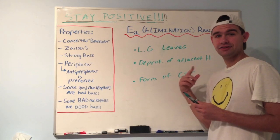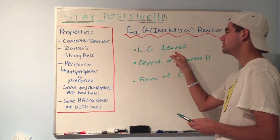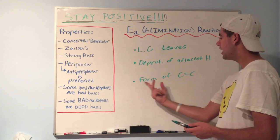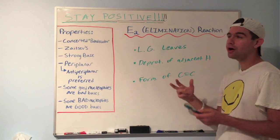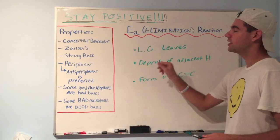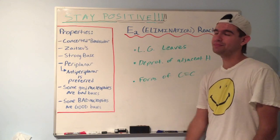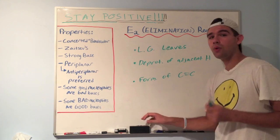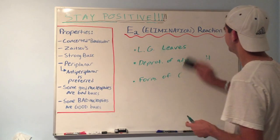Notice some similarities to E1. Leaving group leaves, that happens in E1. Deprotonation of an adjacent hydrogen, that also happens in E1. And formation of a new carbon-carbon pi bond, that also happens in E1. But notice that I didn't include the formation of a carbocation. That happens in E1, but never in E2. That's one of many differences you'll see.